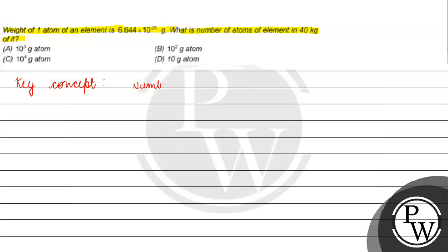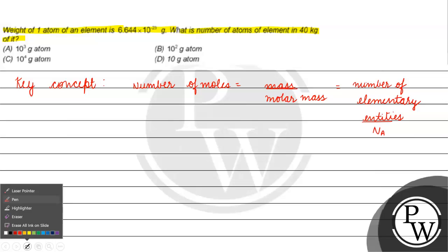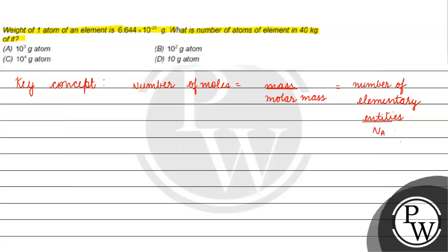The key concept for this question is: number of moles is basically equal to mass by molar mass, and it is also equal to number of elementary entities divided by Avogadro's number. Avogadro's number is 6.022 into 10 raised to the power 23 mole inverse.